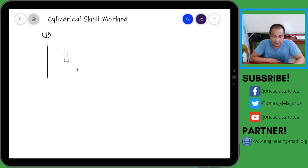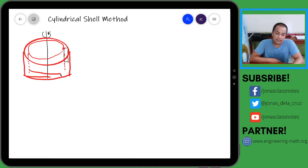Basically what will happen if we rotate this rectangular element about the specified axis, magkakaroon tayo ng something like that. Although it's not properly drawn, I hope you get the idea.